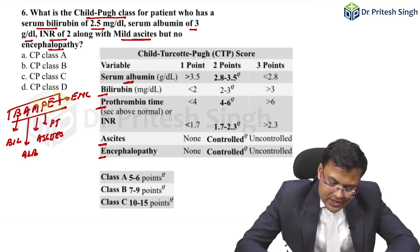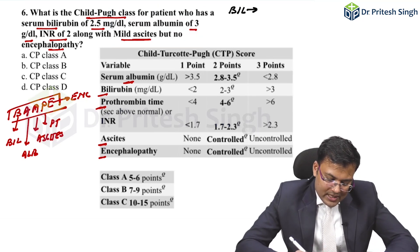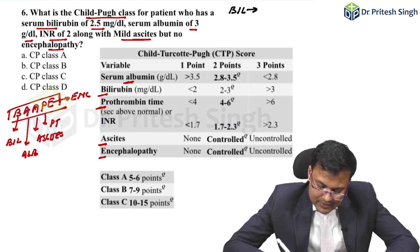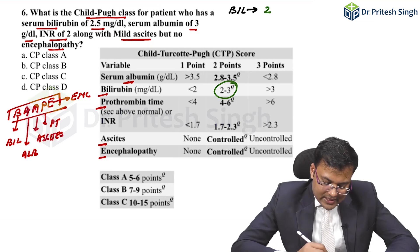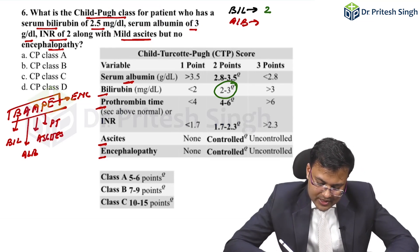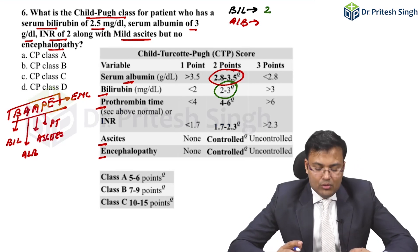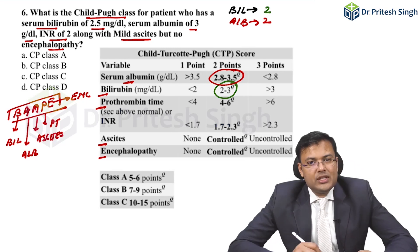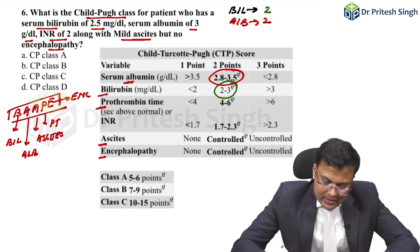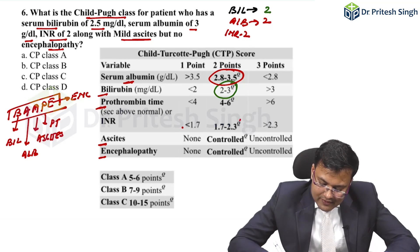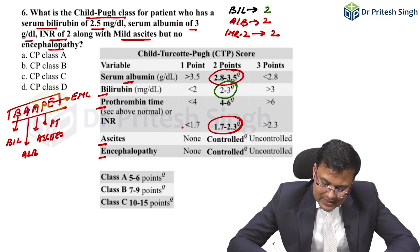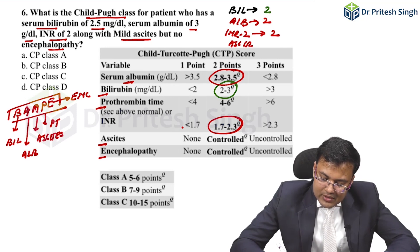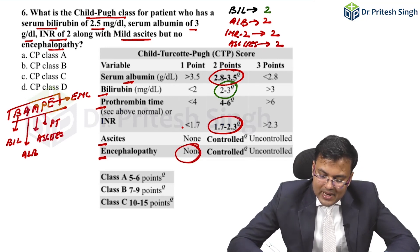For bilirubin of 2.5, which falls between 2 and 3, the score is 2 points. For albumin of 3 g/dL, which is between 2.8 and 3.5, the score is 2 points. For INR of 2, which falls between 1.7 and 2.3, the score is 2 points. For mild or controlled ascites, the score is 2 points. Since there is no encephalopathy, the score is 1 point.